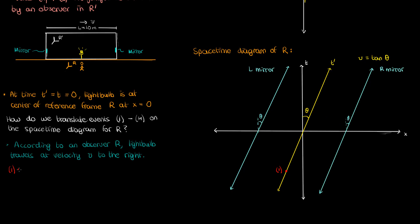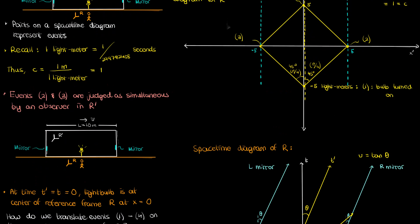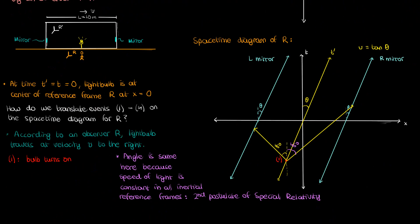Now my observer in r sees event 1 occur: the light bulb turns on and fires two photons, one going right and one going left. The critical thing is that the photons' world lines will be at 45 degrees relative to the vertical, just as in reference frame r'. This follows from the second postulate of special relativity: the speed of light is constant in all inertial reference frames. Therefore, if the light line makes a 45 degree angle in r', it makes that same angle in r — no exceptions. The angle of the light line is the same regardless of which inertial observer you are.